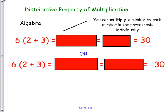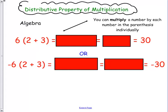Let's look at the distributive property. This is also a new one. Make sure you write these down. If you need to go back and pause the video to write them down, you may. So what the distributive property says, you can multiply a number by each number in the parentheses individually.